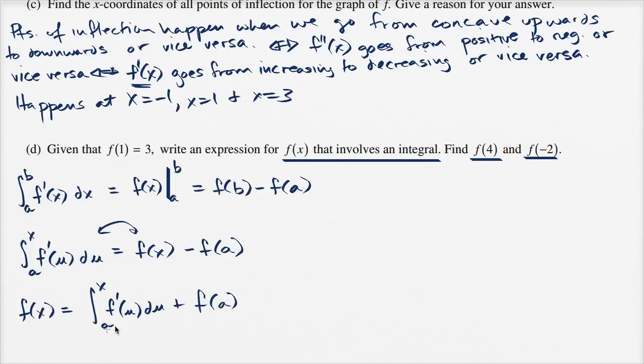So this is a general form if a is a lower bound, but they gave us some information. They said that f of one is equal to three. So if we choose a to be equal to one, then we know that this is going to be equal to three.